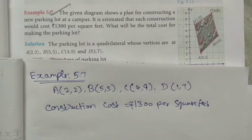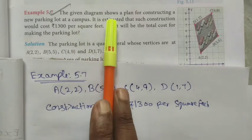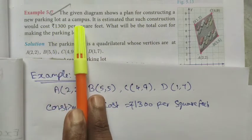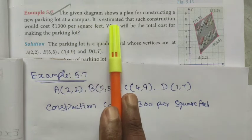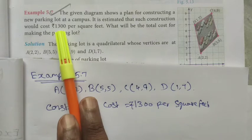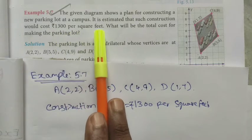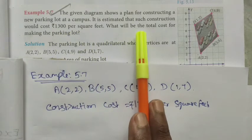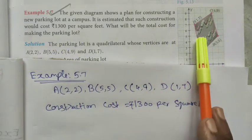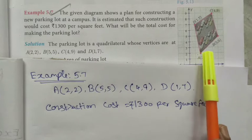Hi students, class 10 example sum 5.7. The given diagram shows a plan for constructing a new parking lot at a campus. It is estimated that such construction would cost rupees 1300 per square feet. What will be the total cost for making the parking lot?